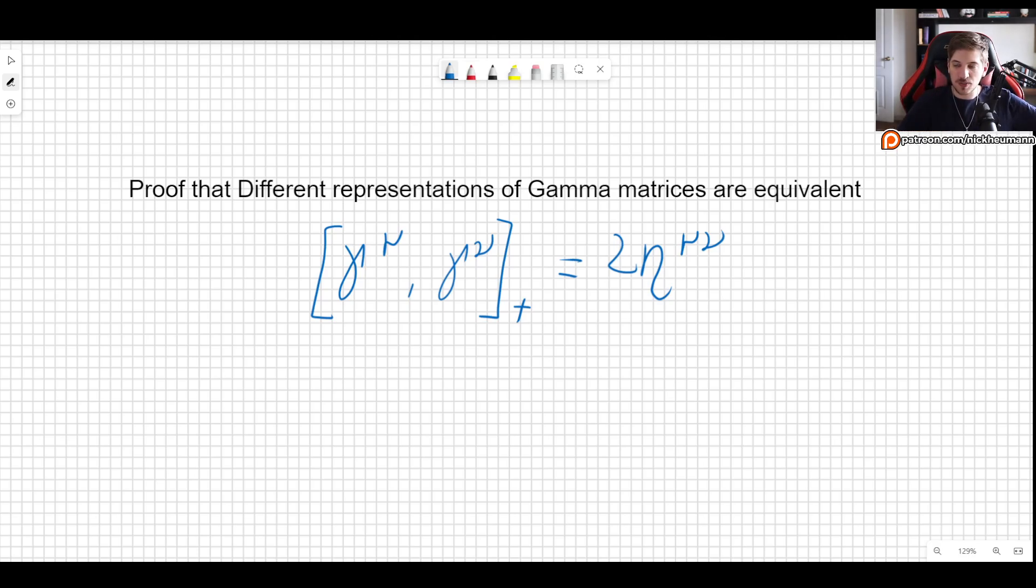Something we have talked about in the past is that when you actually want to write down one of the gamma matrices, whether it is gamma zero or gamma one or whatever, there are many different possibilities that you can take.